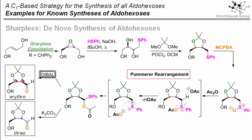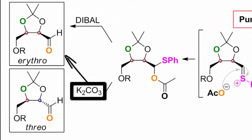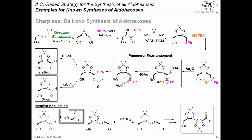By cleaving the acetate with DIBAL, the aldehyde can be generated under retention of the erythro configuration. With potassium carbonate on the other hand, the acetate is also cleaved to release the aldehyde, but reversible enolate formation leads to epimerization and thus formation of the threo glycol. This C4 building block can then be subjected to a Wittig reaction with an electron-deficient Wittig reagent, after which reduction gives a trans-configured allylic alcohol again. And this means we can go through the whole process again in order to make any aldohexose you want.